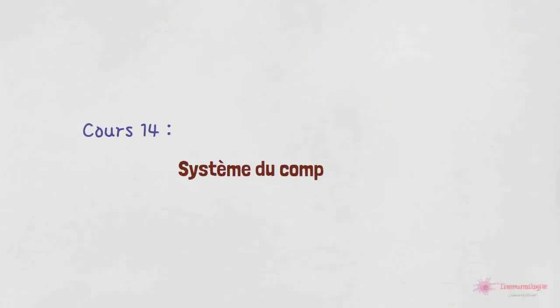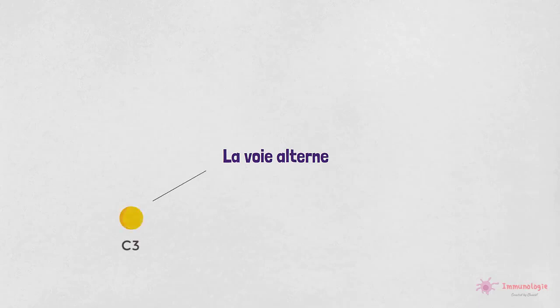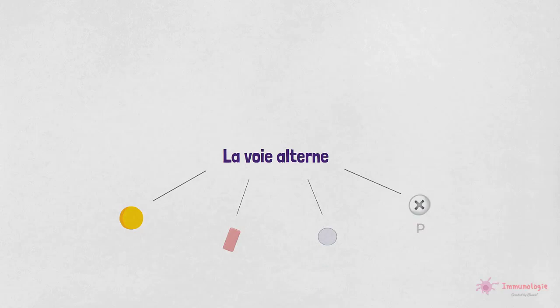Le système du complément — La voie alterne. La voie alterne utilise les quatre composants sériques suivants : C3, le facteur B, le facteur D et la properdine.